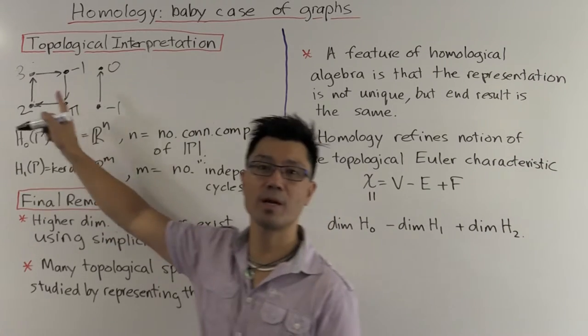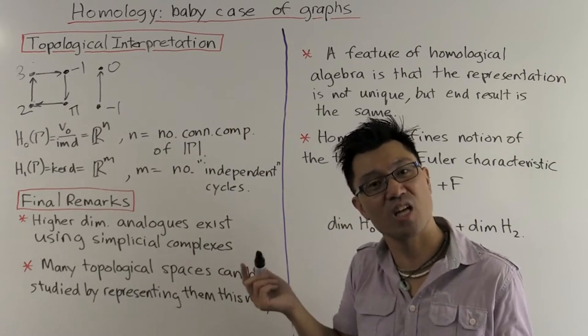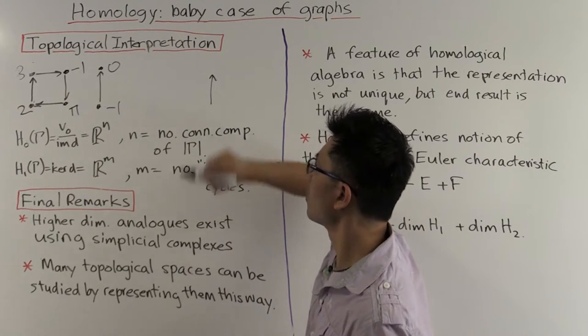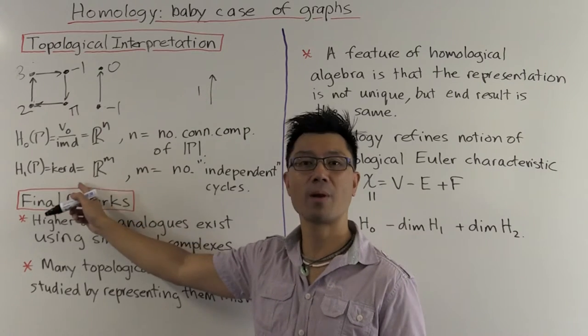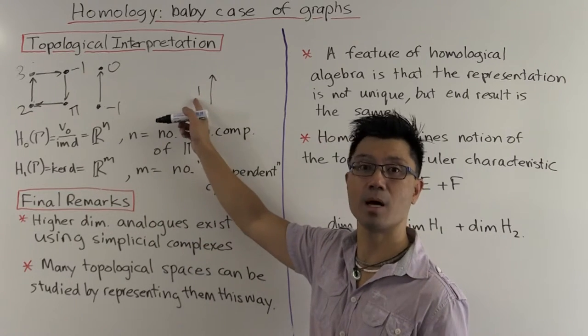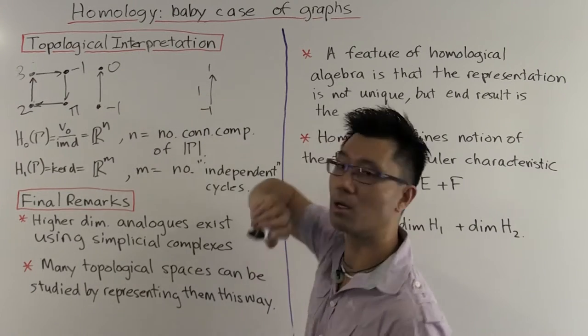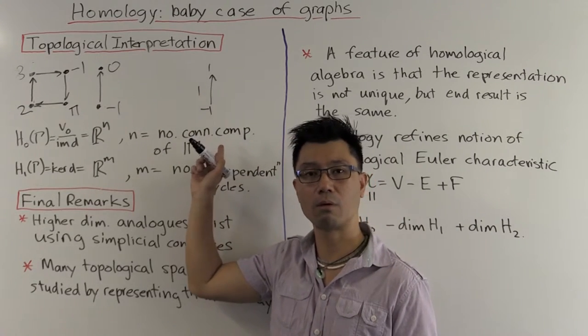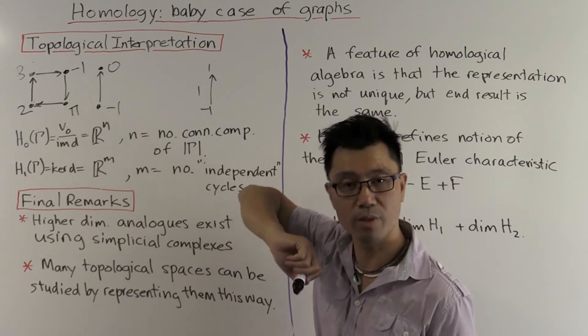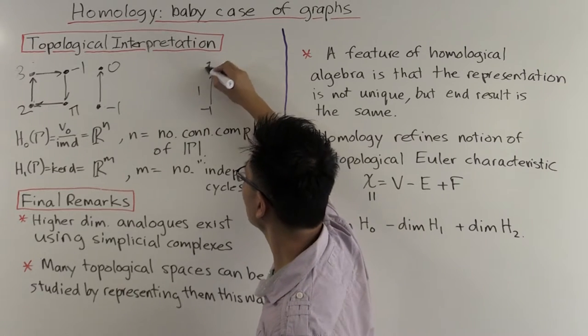Okay, so the kernel of D, we need a linear combination of edges, such that when we apply D, we get 0. So let's just start with an edge like this one. Suppose we have one of them. When we apply D, we get a linear combination of vertices. What's that? It's the head of this minus the tail. So we have the 0 here, we need to cancel it with the tail of an edge. So we need to add an edge like this one here. That one of them. That gets rid of that.